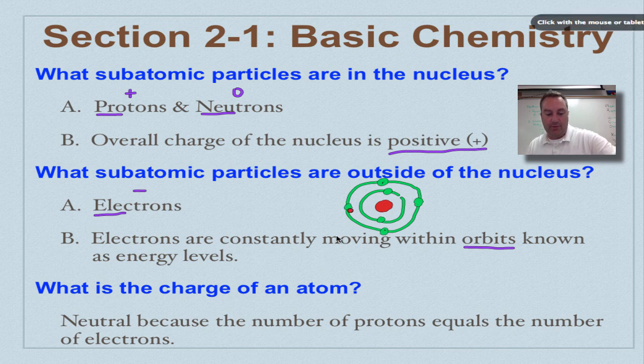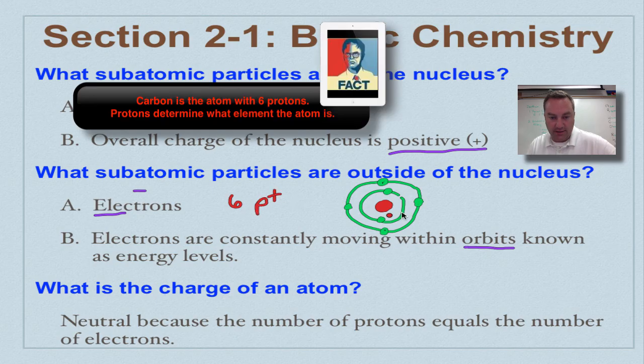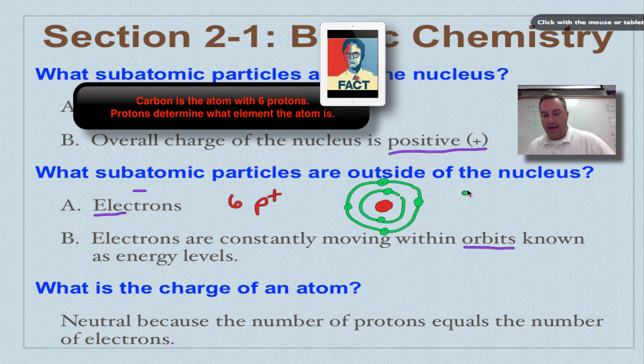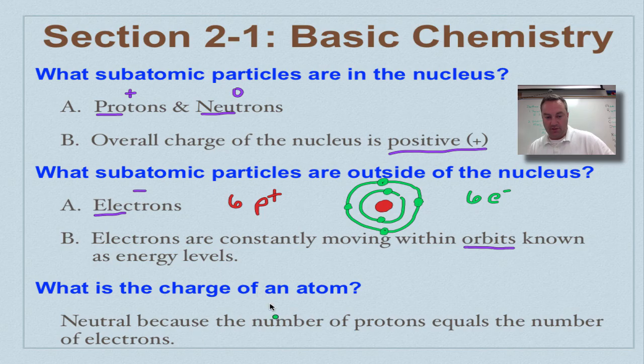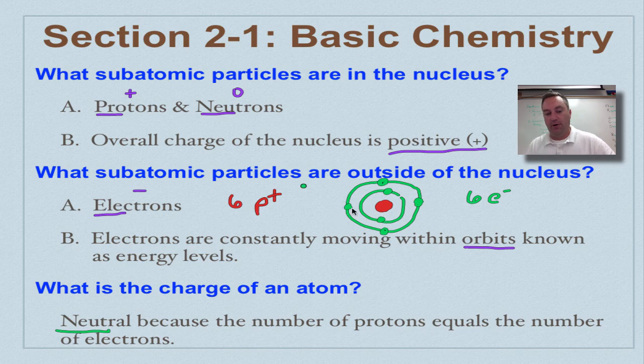Let's say we got two electrons here, and we'll just say we have those on the outside. In this example, we have six protons in the nucleus. So right in here, that's the nucleus. And we have six electrons. What's the overall charge of an atom? It's going to be neutral because the number of protons are going to cancel out the number of electrons. So six minus six equals zero.